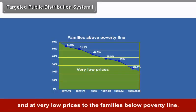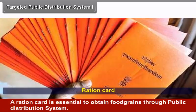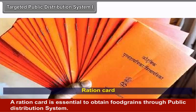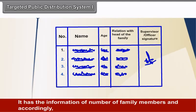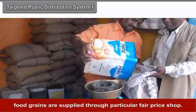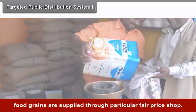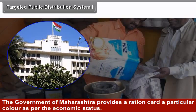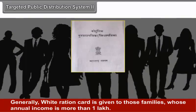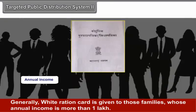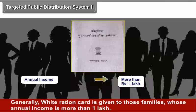Targeted Public Distribution System. Since June 1997, a dual pricing structure was introduced under Targeted Public Distribution System. Accordingly, the target was to distribute food grains at reasonable prices to the needy families above poverty line, and at a very low price to the families below poverty line. A ration card is essential to obtain food grains through public distribution system. It has the information of number of family members and accordingly food grains are supplied through a particular fair price shop.